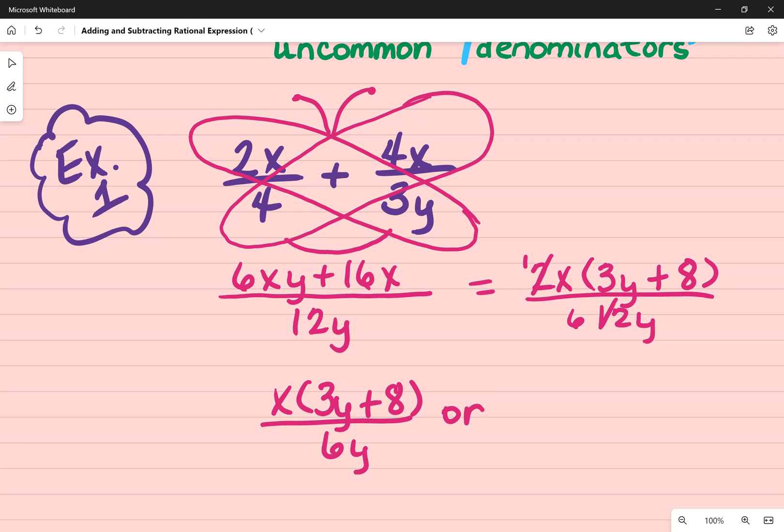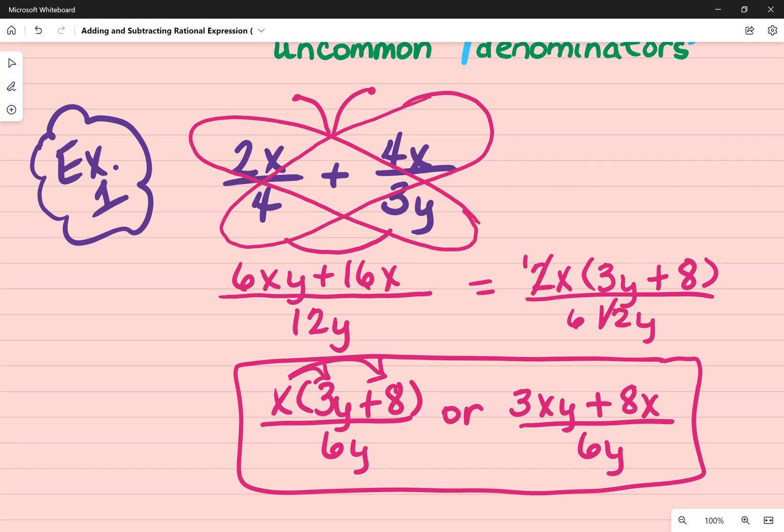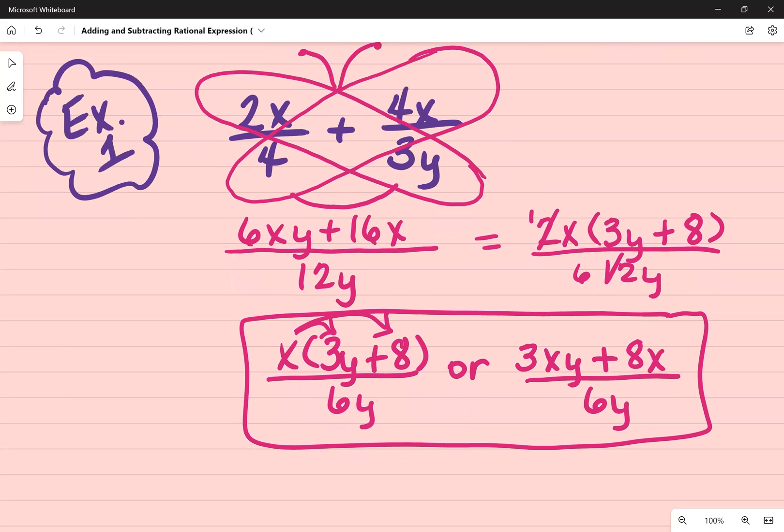And in some instances, you'll see that the answer will actually be expanded. So in that case, it's going to be x times each one of these terms. And that's going to be 3xy plus 8x, all divided by 6y. So those are two acceptable answers for that rational expression.